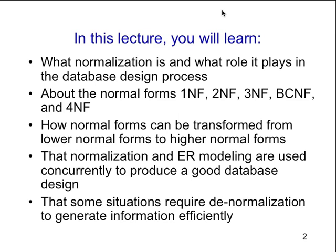Third normal form is kind of the form in which most databases exist. If you can reach third normal form, you've got a good design. You can also use BCNF — some people prefer that over third normal form. You can be in third normal form and also in BCNF, or in third normal form and not in BCNF. Third normal forms are also second normal form and also first normal form, but not necessarily BCNF.